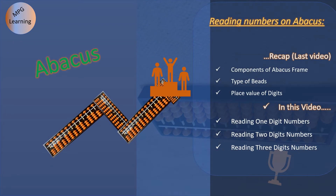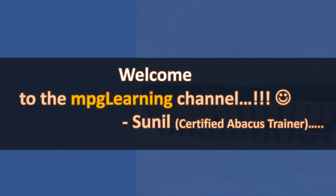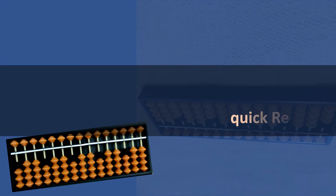In this video we'll be discussing reading numbers on abacus, and we'll quickly recap from the last video: mainly components of the abacus frame, types of beads, and place value of digits. We'll also discuss reading one, two, three, and four digit numbers. Welcome to MPG Learning Channel — my name is Sonel and I am a certified abacus trainer.